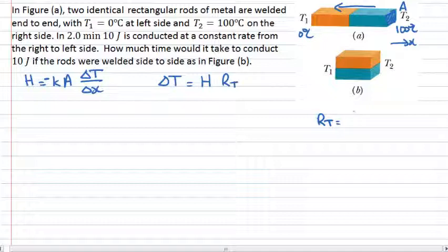The thermal resistance of material depends upon the length of the material. It's inversely proportional to the area and inversely proportional to the thermal conductivity. In this case here, we can consider each one of these rectangular rods as having a specific thermal resistance R1 and R2.